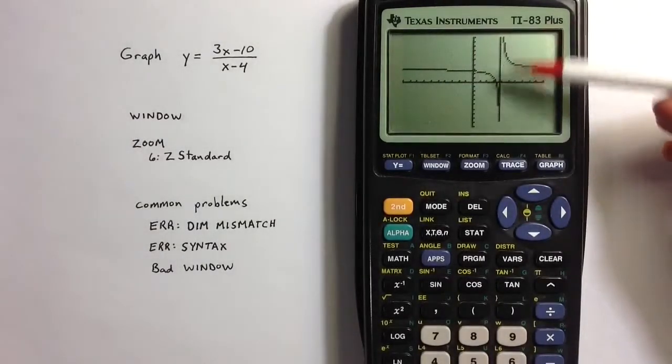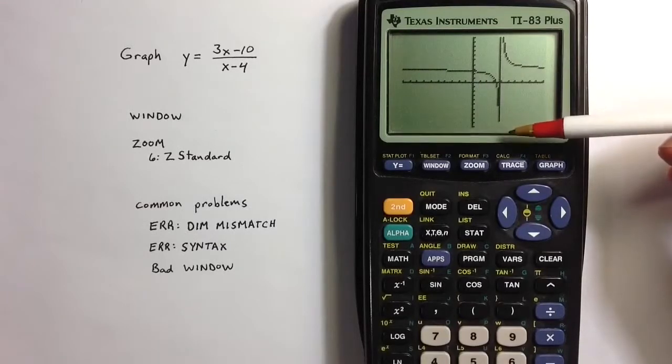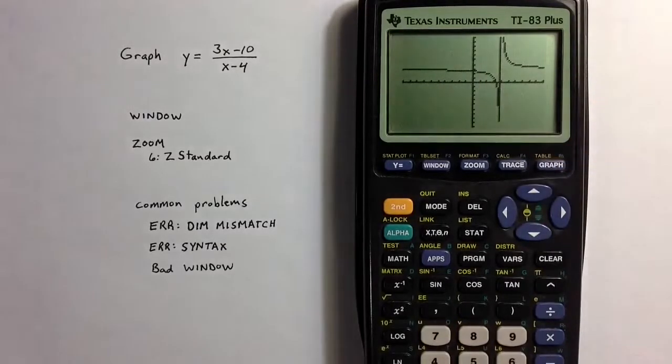So it gives us a false line, and in some ways you can kind of think of that as representing the asymptote, but it's really just a mistake that the calculator is making.